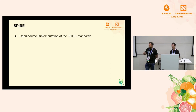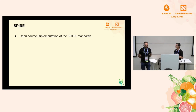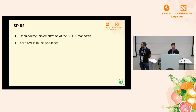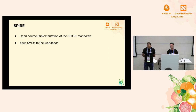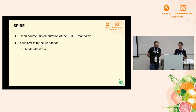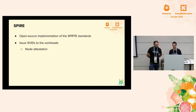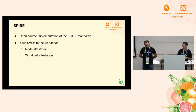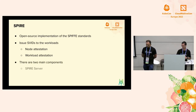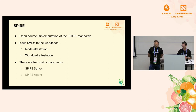SPIRE is a production-ready implementation of the SPIFFE standards, and it is also open source. With SPIRE, the main goal is to be able to issue SVIDs to workloads in as many places as possible. In order to do that, it implements two kinds of attestation mechanisms: node attestation and workload attestation. It has two main components: the server and the agent.